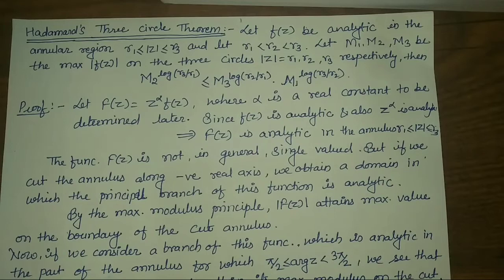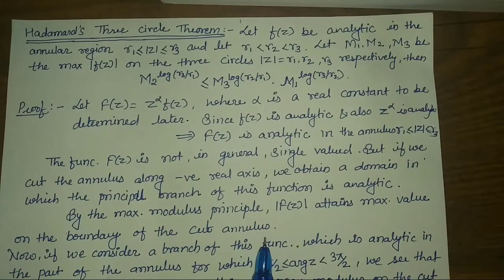A branch of a multi-valued function is a single-valued function which is analytic in some domain at each point of which the function takes one value of the multi-valued function. Now, by the maximum modulus principle, mod F(z) attains its maximum value on the boundary of the cut annulus.